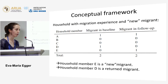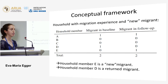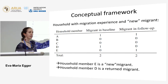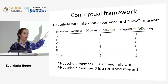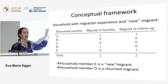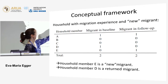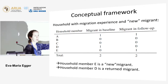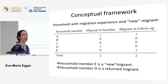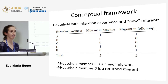Our sample is restricted to only households that have a migrant at baseline — so they all have migration experience — and then we compare those that have a new migrant to those that don't have a new migrant in the second wave.